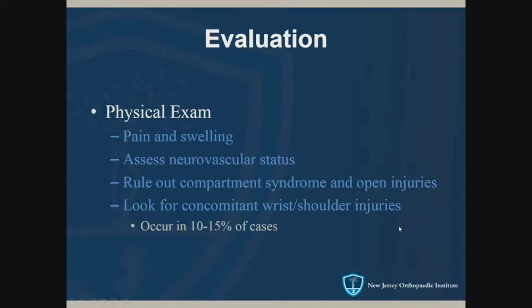On evaluation, there will be a history of trauma — pain and swelling with the dislocation and obvious deformity. The elbow will not feel like the other side. It's important to assess neurovascular status: make sure there is intact blood flow to the hand, check the radial pulse, and ensure brisk capillary refill. Check the motor exam and sensation.